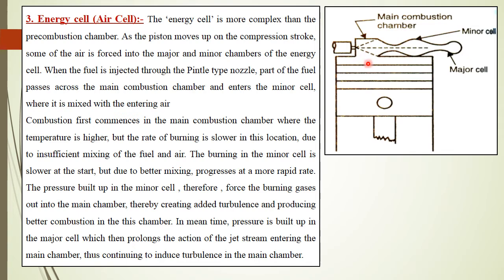Bulk combustion occurs in the main combustion chamber. Meanwhile, pressure builds up in the major cell, which prolongs the action of the jet stream entering the main chamber — this pressure continues to induce turbulence in the main chamber, prolonging combustion.